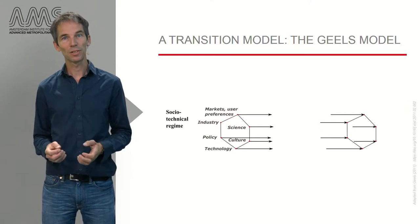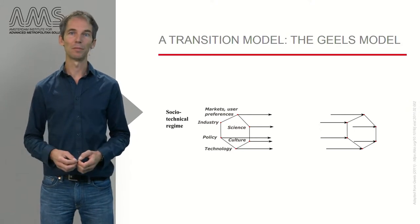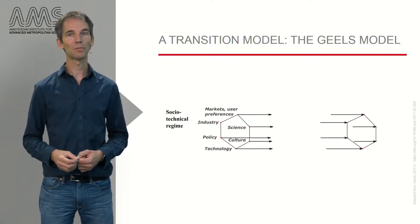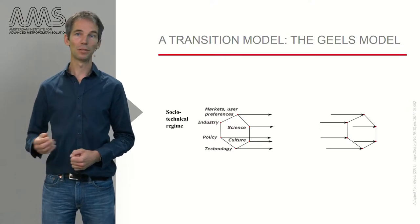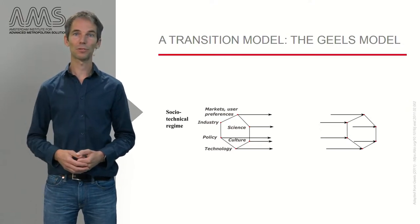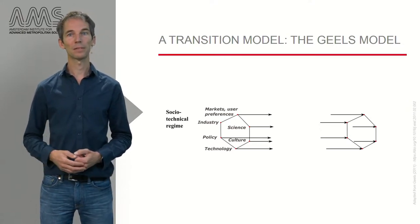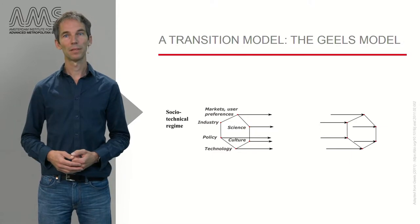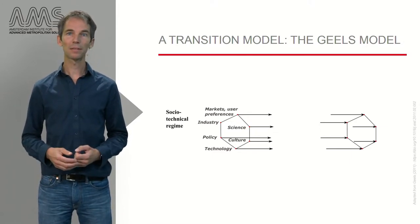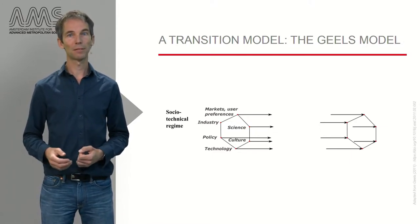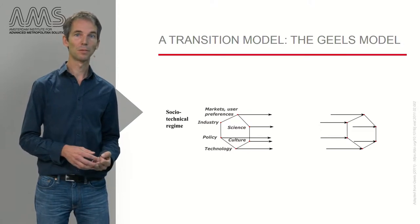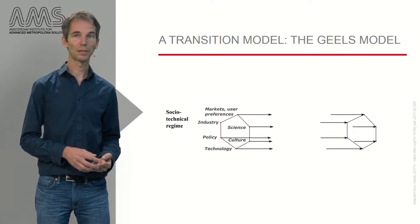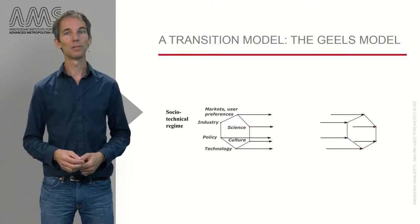An envisioned sustainable energy regime would require a major shift towards a fundamentally different regime, based on renewable resources, new technologies and altered energy practices. This set of changes is depicted as a bundle of arrows in the heart of the figure, running from the current regime on the left side to the new regime on the right.